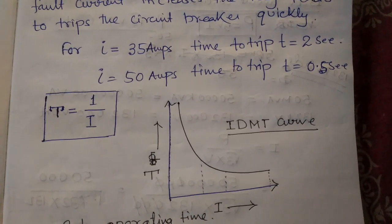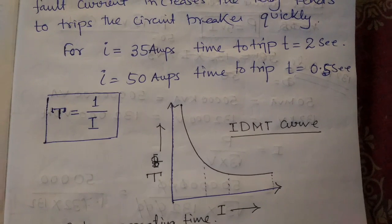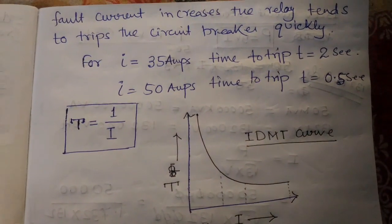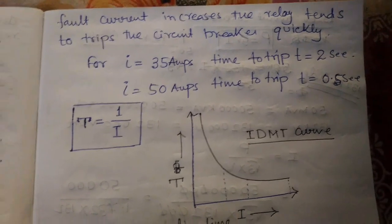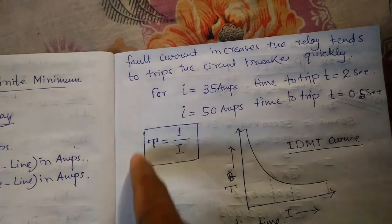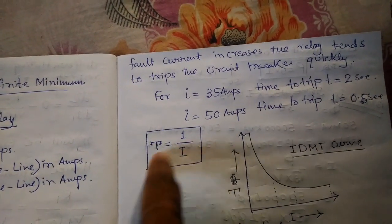So the time is inversely proportional to the fault current: T proportional to 1 by I. If the current I is increasing gradually, the time will be decreasing accordingly.